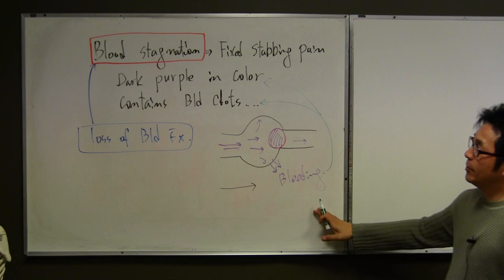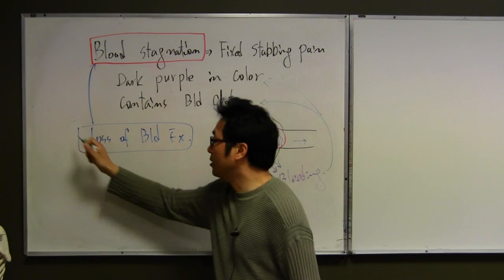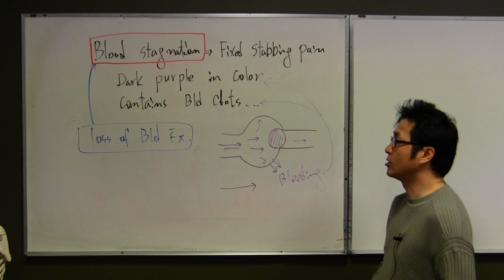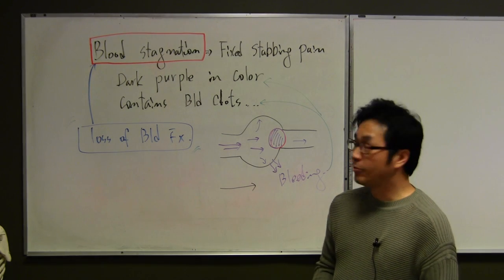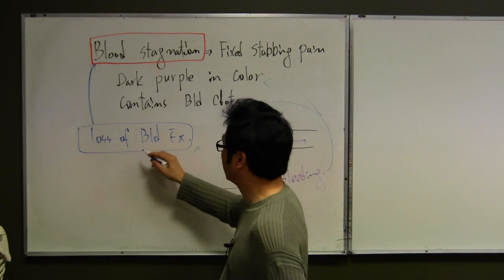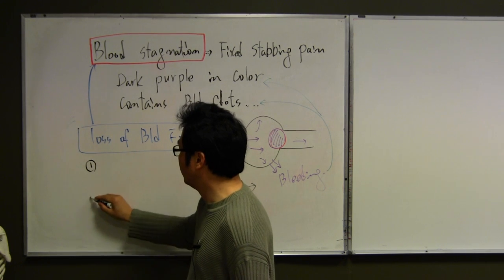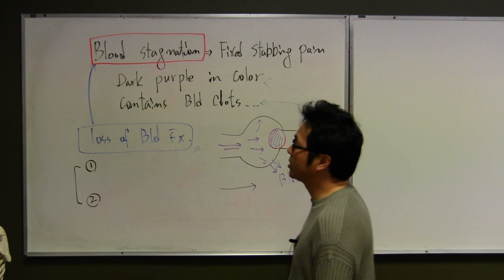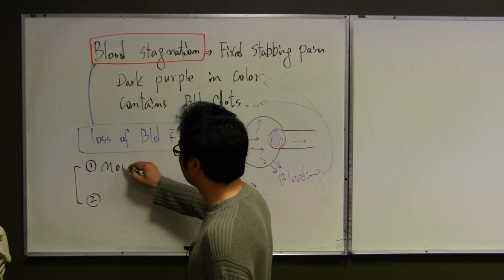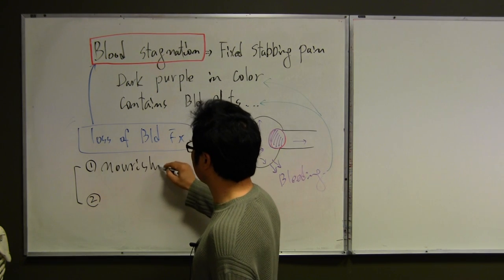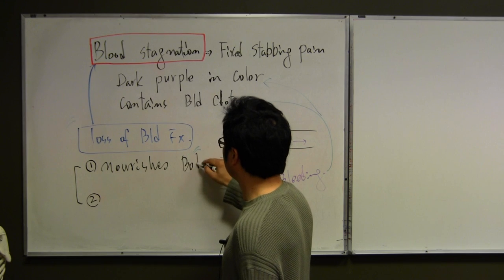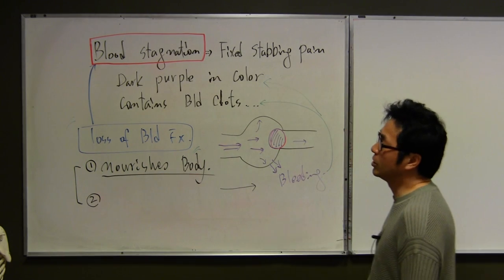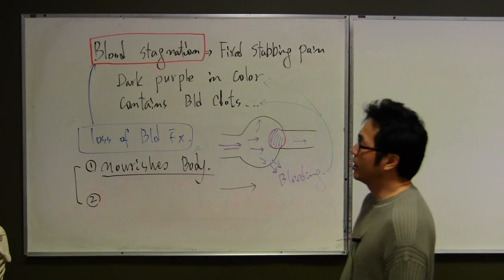But actually, I want to explain the later thing with hidden meaning of the blood stagnation, which means loss of the blood function. So we have to know about what is the blood function. There's only two in TCM. The first one is nourishes. Nourishment is what? One of the functions of the blood. And the other one is what?